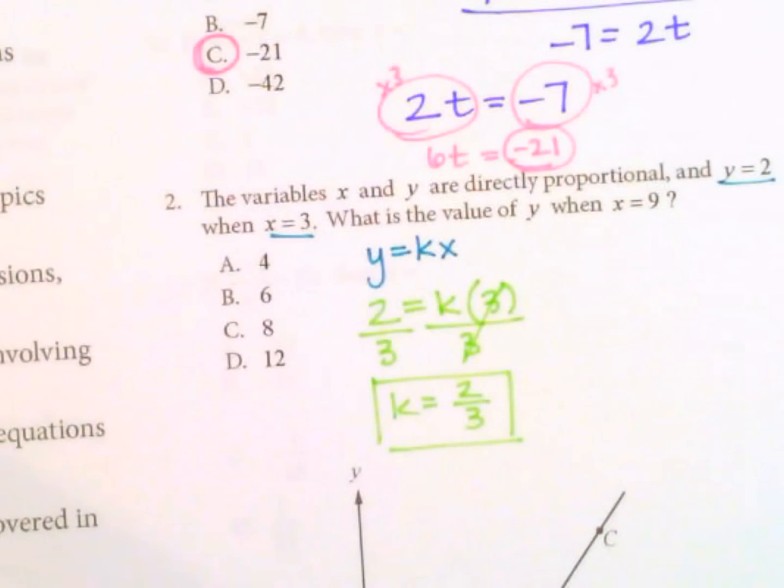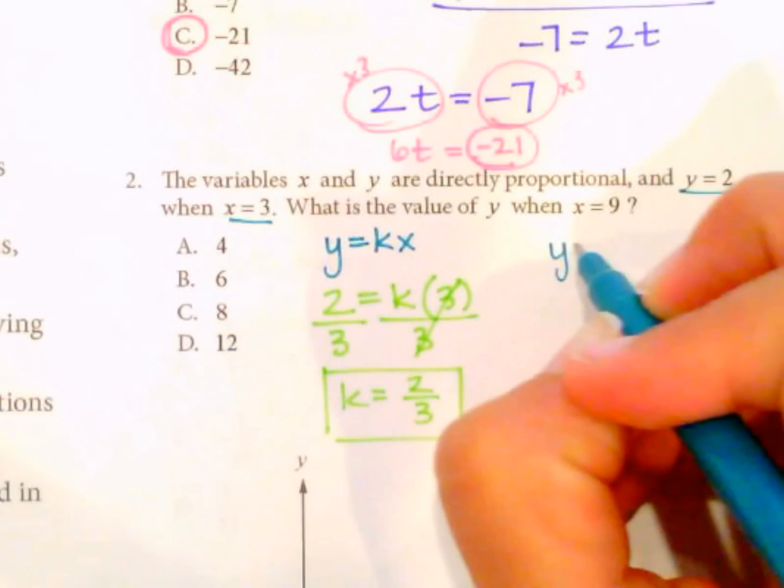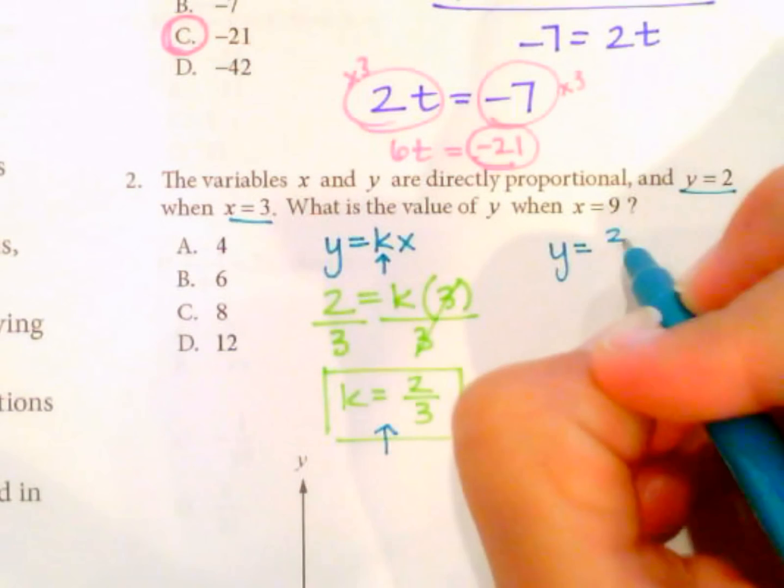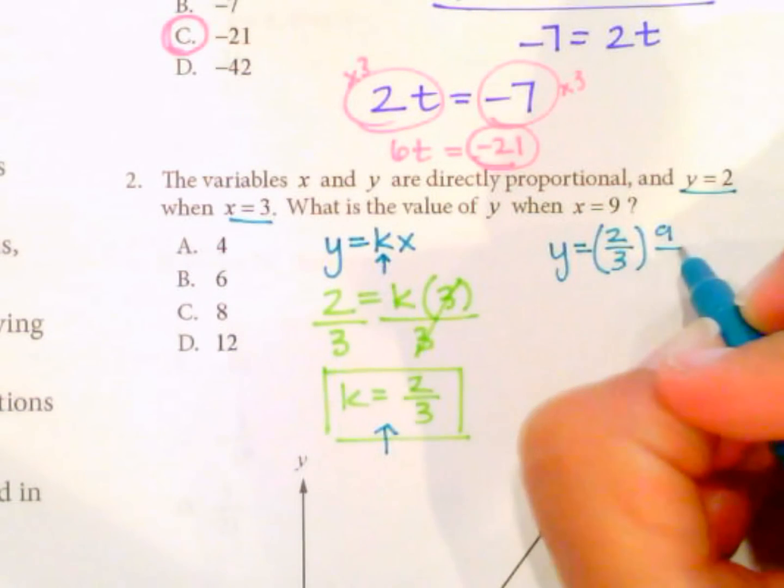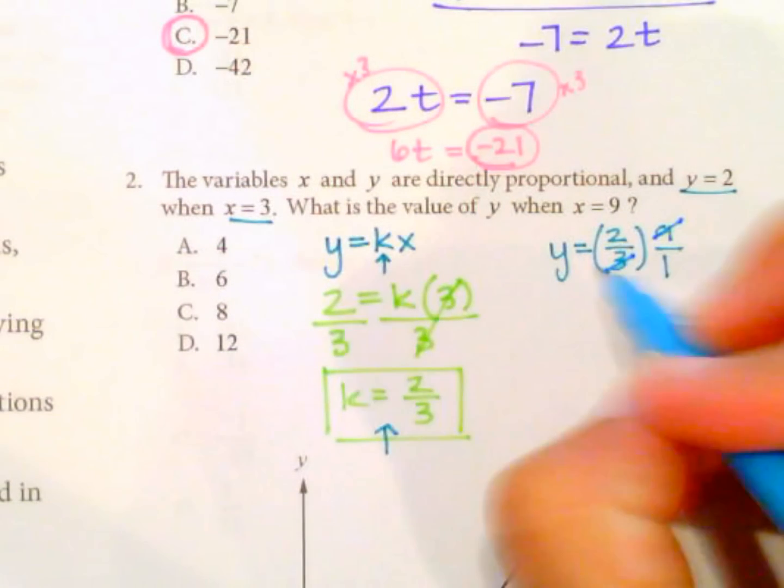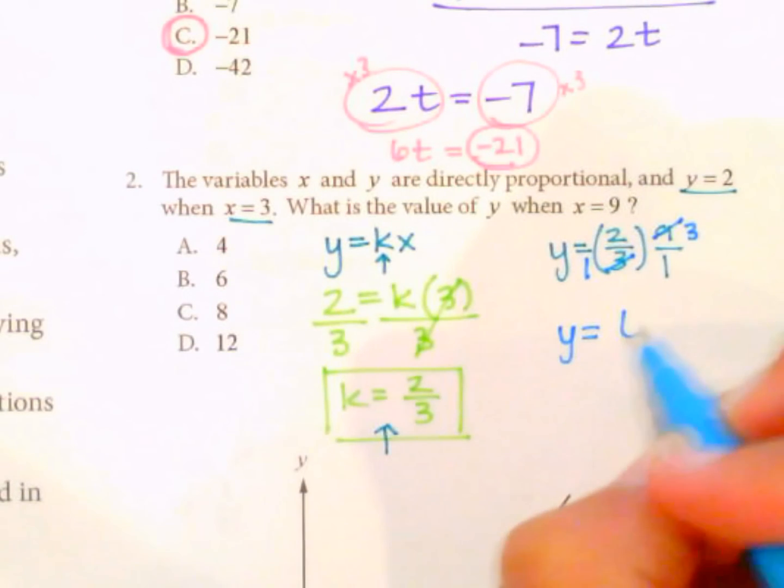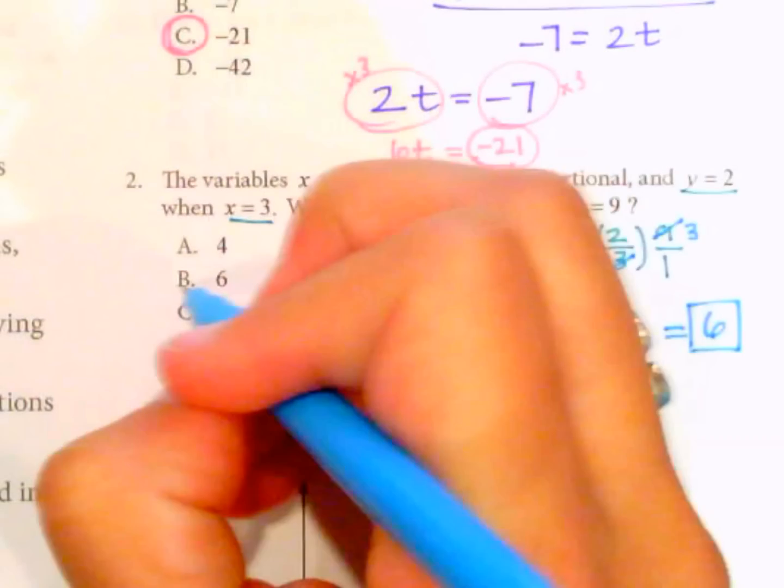The next step. So what is the value of y when x equals 9? So y equals k, which is 2 thirds times x, which is 9. I'm going to put it 9 over 1. And then as we've done before, we're going to reduce this. 9 over 3 can reduce to 3 over 1. So y equals 2 times 3 is 6, 1 times 1 is 1. So y equals 6. When x is 9, y is 6. So our answer is B.